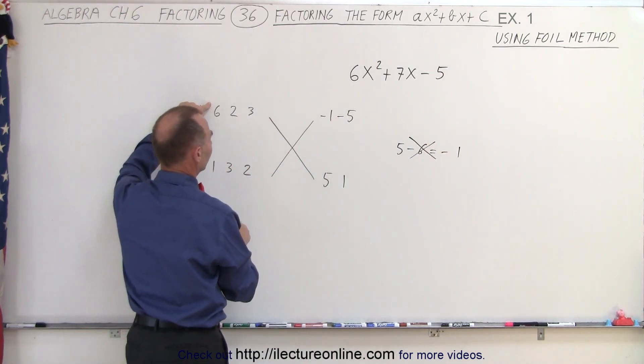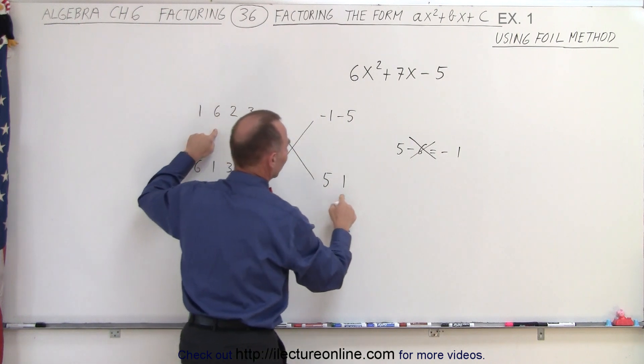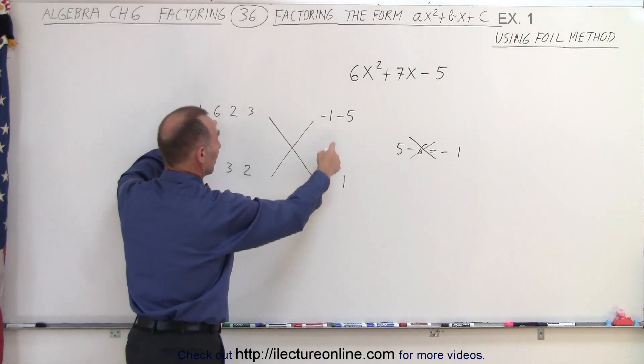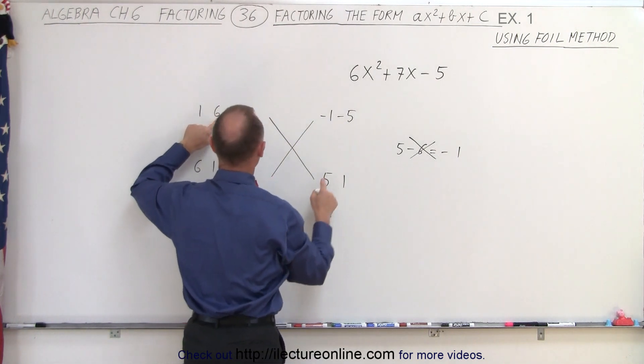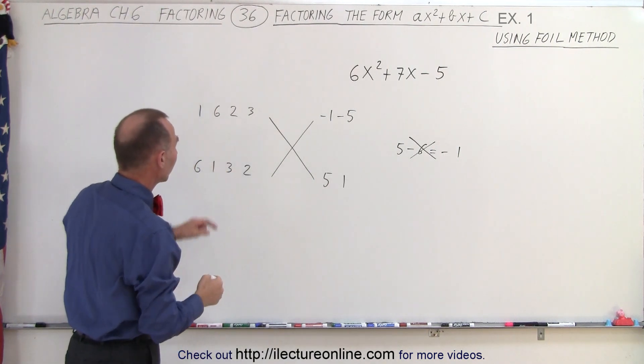How about the next set? 6 times 5 and 1 times negative 1. So 6 times 5 is 30, but then you can already stop because we're not going to get to the number 7 when we start off with a big number like that, so the second set doesn't work either.